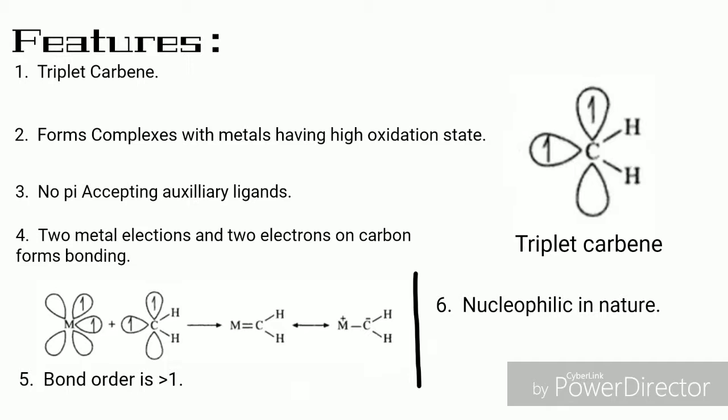We will discuss about the various features of Schrock carbene. The Schrock carbene is in triplet state, that is it is a triplet carbene. Here also the metal carbon double bond occurs and the carbon atom is attached with two hydrogen atoms.